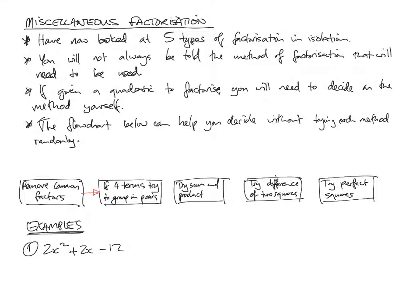So start from remove common factors. Next, if there's four terms, try to group it in pairs, factorize that way, and then move on.